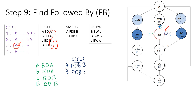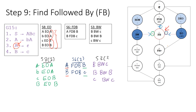Same goes for step 3, BW, which is at position 3. We are only choosing BW relations that start with B or start with C. So we have: B BW C, B BW B, and C BW C. Step 6 is the bridge connecting step 8 and step 3. Because we have A EO A, A FDB B, and B BW C, we will have A FB C — this is like a long transitive operation.